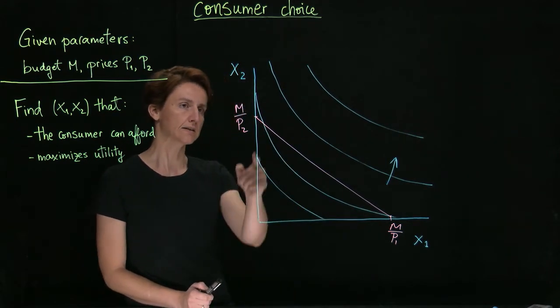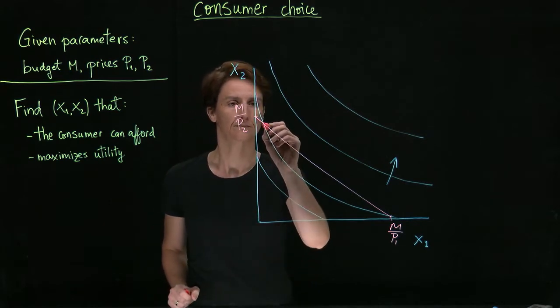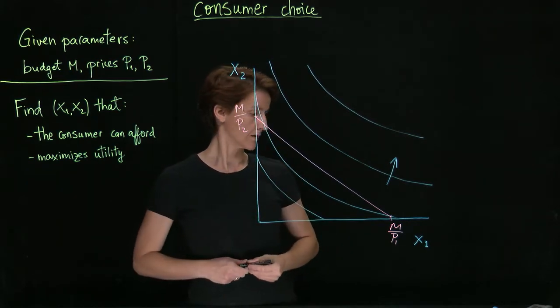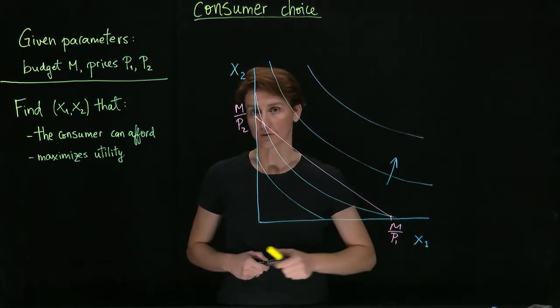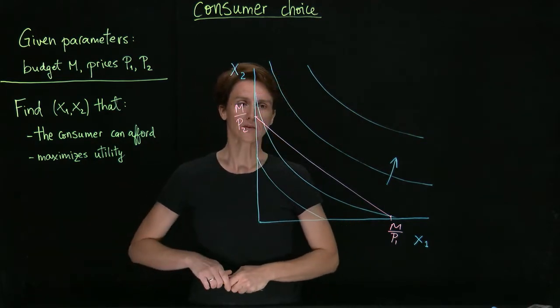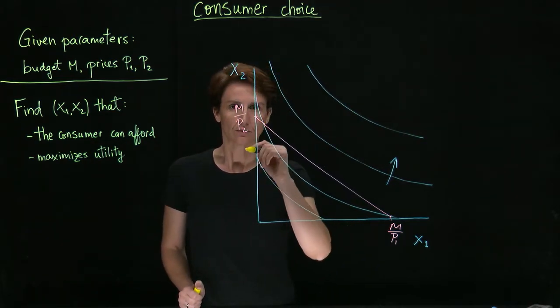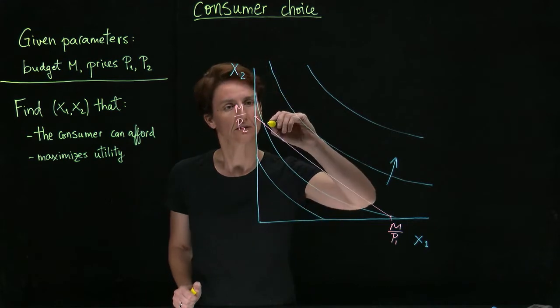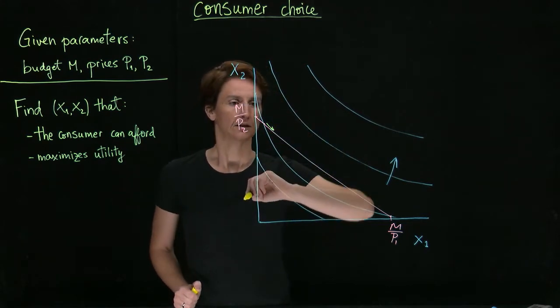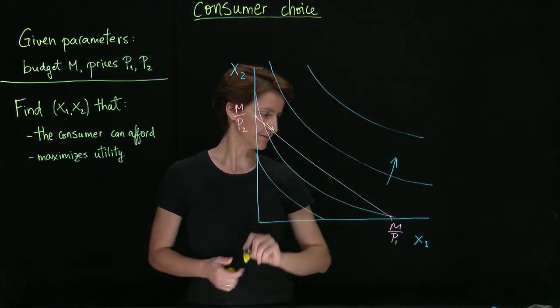So we could consider maybe choosing this point. Does that seem like a good option? No, because we could move in this direction and get to a higher indifference curve.